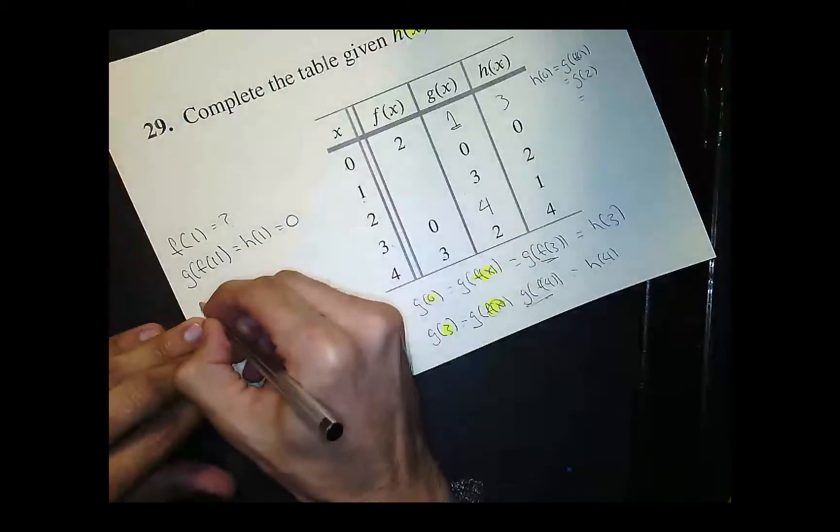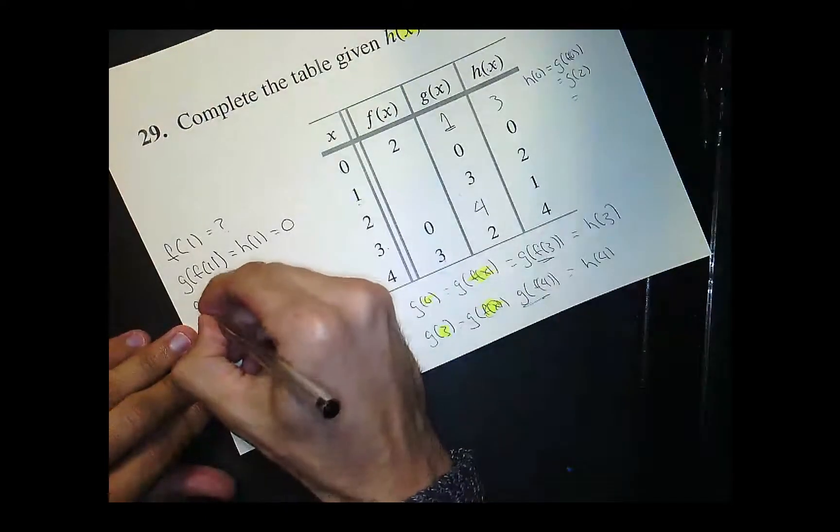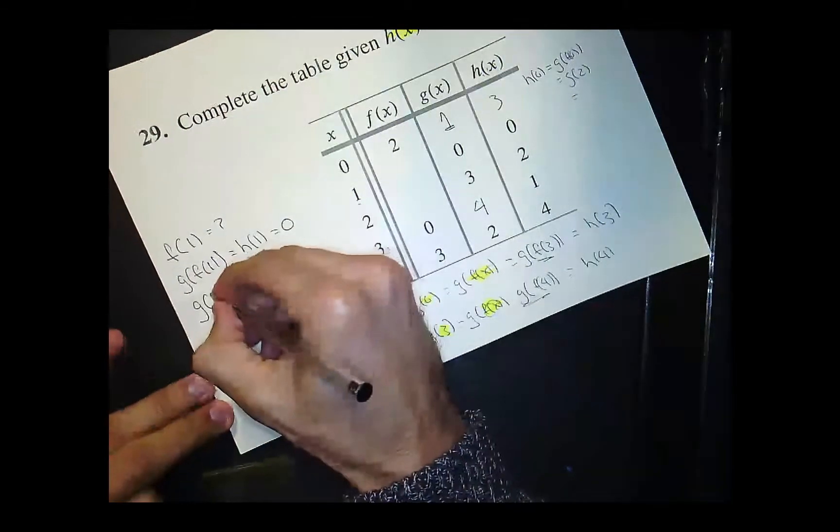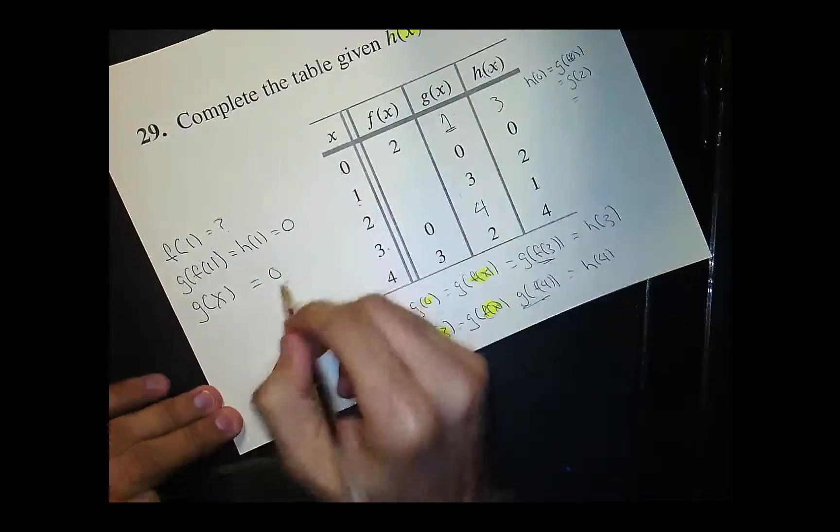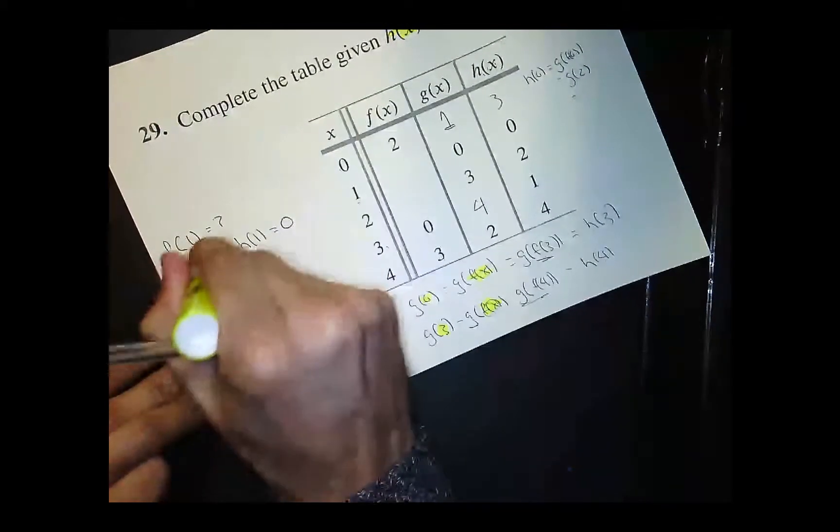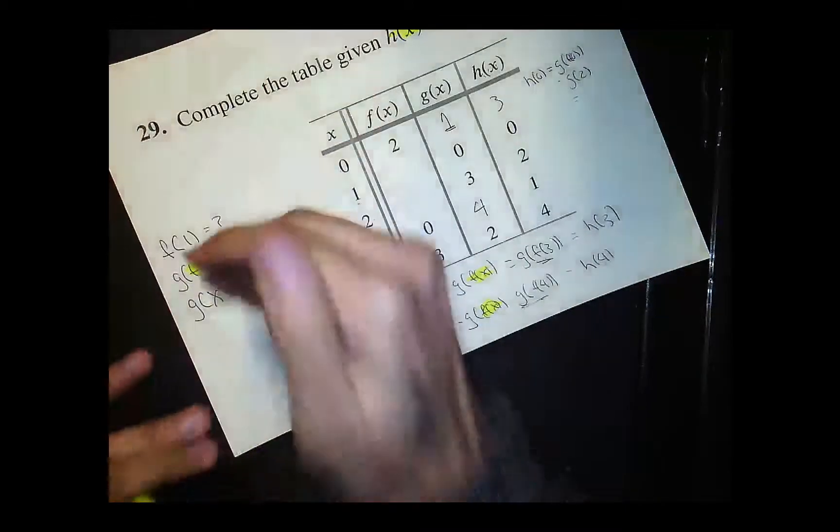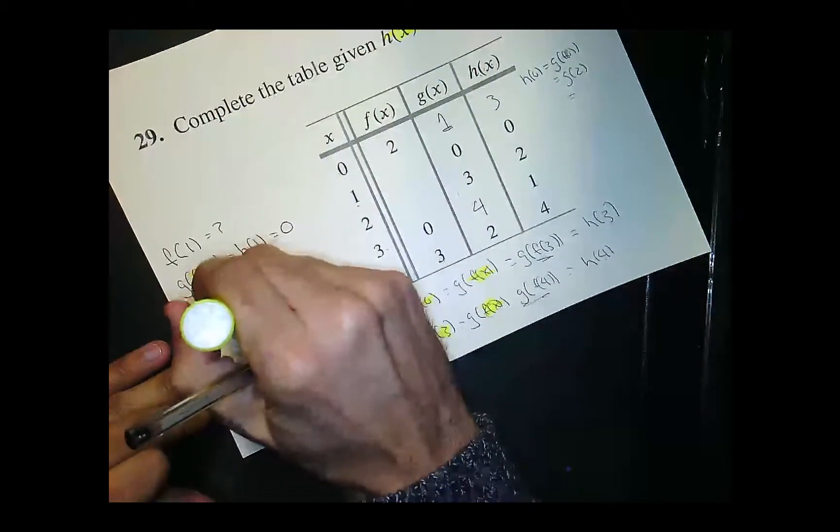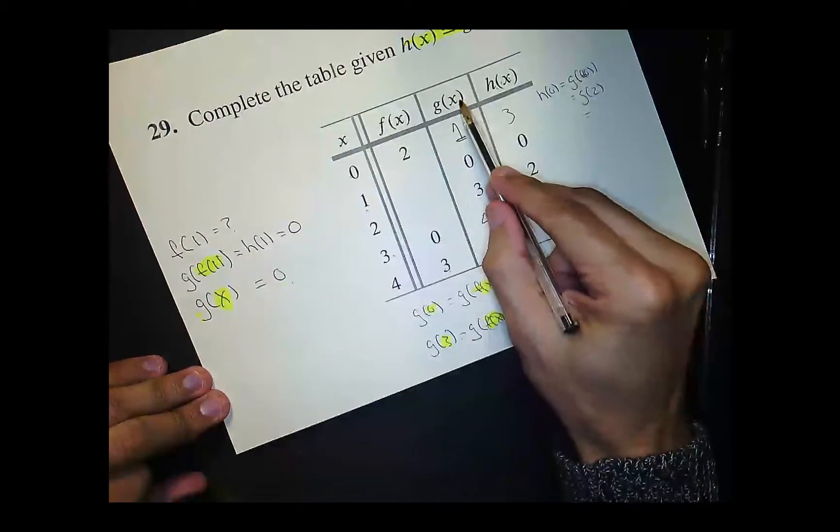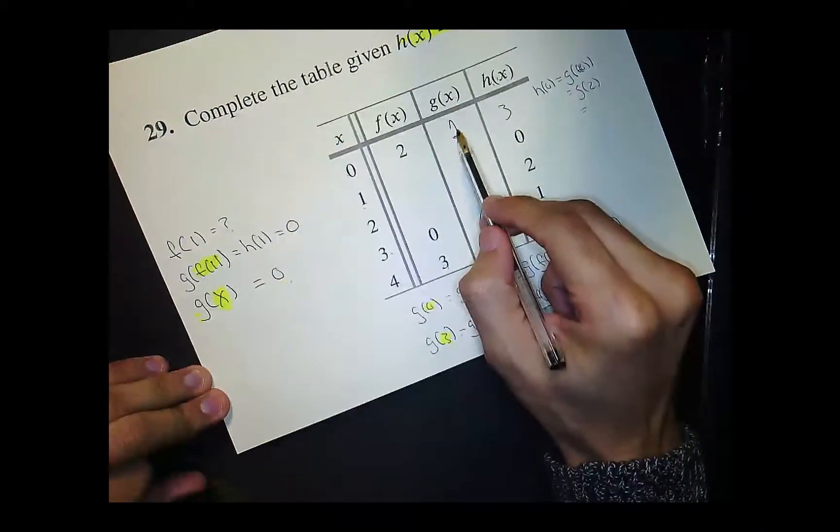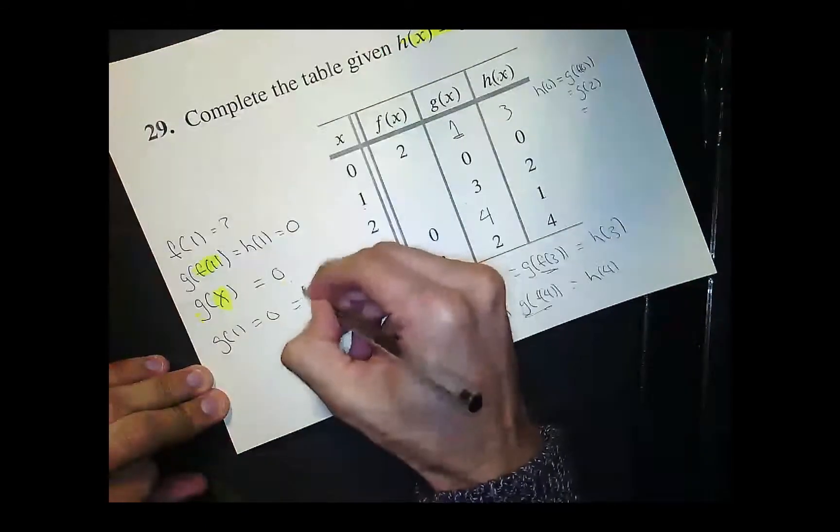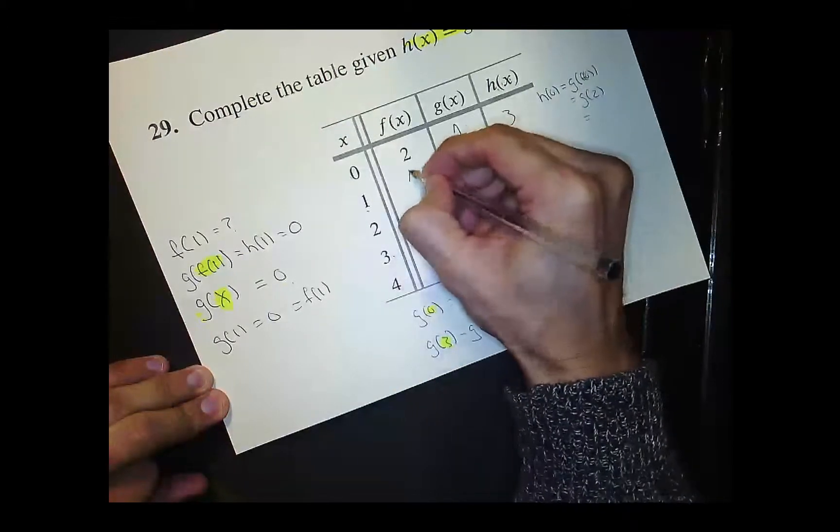So now it becomes a matter of, right, what g of x produces 0, right? When does g produce 0? So that I could, right? Because f of 1 will be whatever value of x makes g equal to 0. So then, well, let's see. When does g equal 0? That's at 1. So g of 1 equals 0. And then that's equal to f of 1. So then that means this is 1.